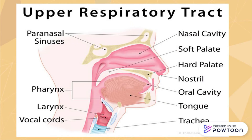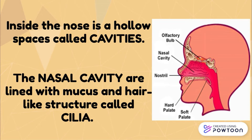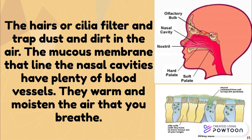The upper respiratory tract. The nose is the outer part of the respiratory system. The nose has two openings called nostrils, separated by a strong and flexible cartilage. Inside the nose is a hollow space called cavities. The nasal cavity is lined with mucus and hair-like structures called cilia. The hairs or cilia filter and trap dust and dirt in the air.